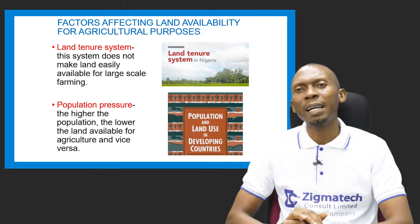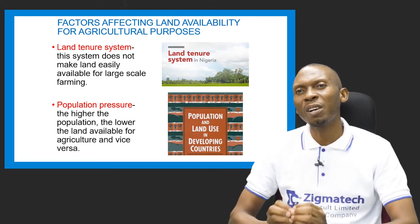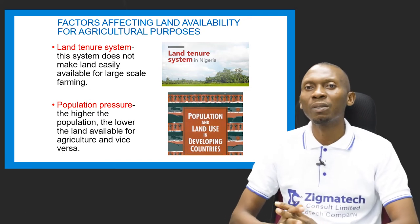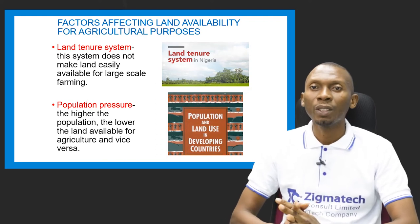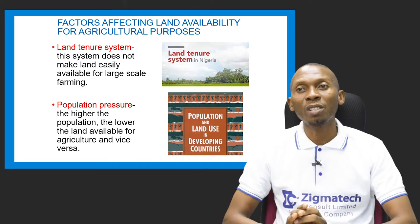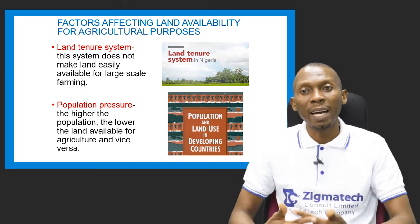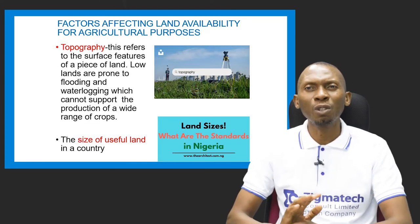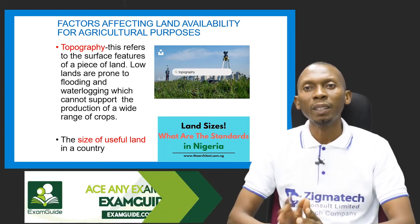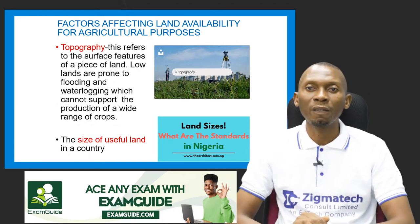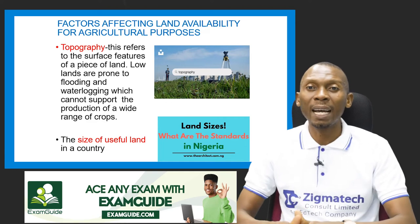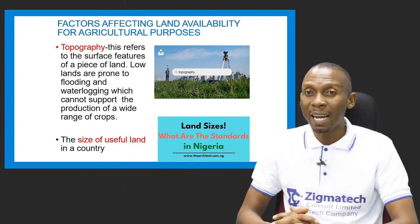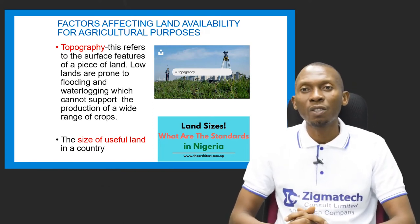Several factors affect land availability for agricultural purposes. The land tenure system determines whether land is easily available for large-scale farming. Population pressure is another factor — the higher the population, the less land available for agriculture. Topography, referring to the surface features of land, also plays a role, as low-lying lands prone to flooding and waterlogging cannot support a wide range of crops, except swamp rice.